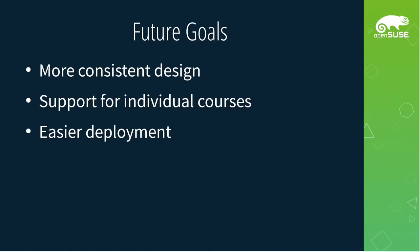That brings us to the future goals I have for this project. I want to improve the design and make it more consistent — I already use IBM's Carbon Design System and I'd like to use it even more. We also need support for individual courses: in Germany, grade 11 students share the same subjects, but in grades 12 and 13 you choose your own subjects, so in the homework planner it wouldn't make sense to show tasks from a course you don't have. I also want to make deployment much easier — right now it's a lot of services to deploy by hand, and a Docker Compose file to spin everything up would be great.